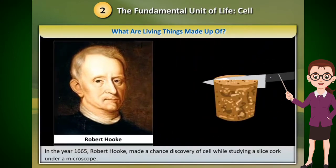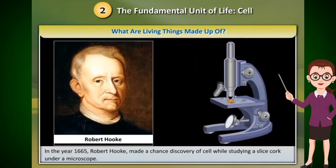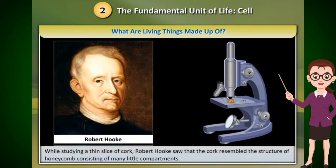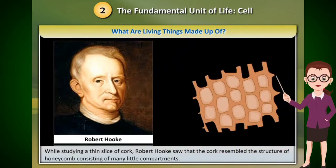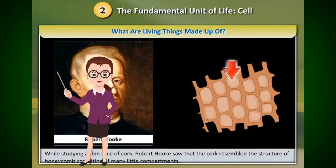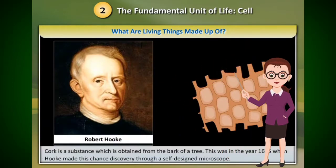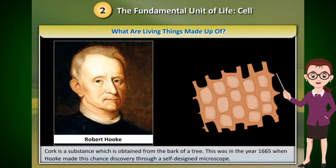While studying a thin slice of cork under a microscope, Robert Hooke saw that the cork resembled the structure of a honeycomb, consisting of many little compartments. Cork is a substance which is obtained from the bark of a tree. This was in the year 1665, when Hooke made this chance discovery through a self-designed microscope.